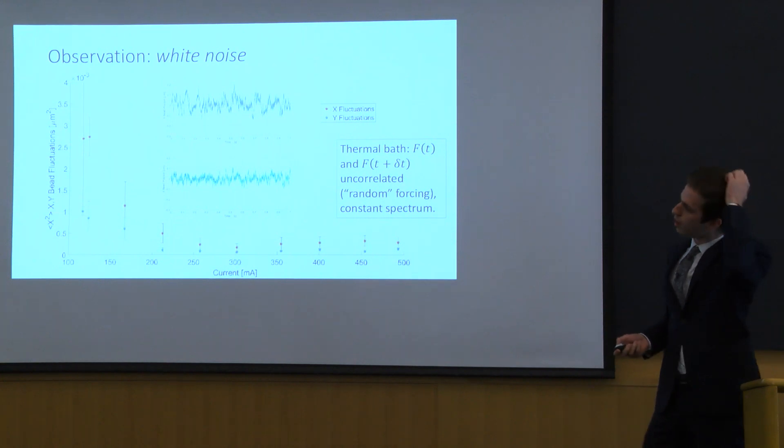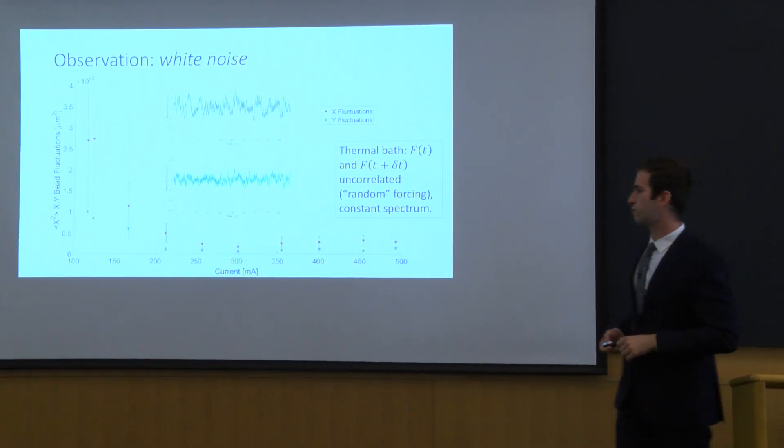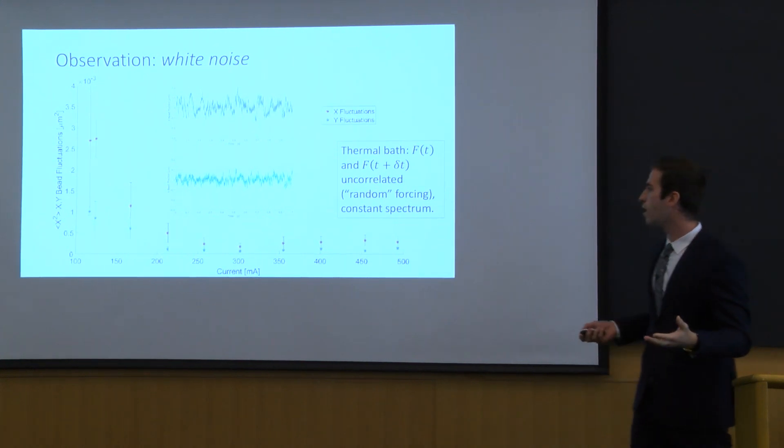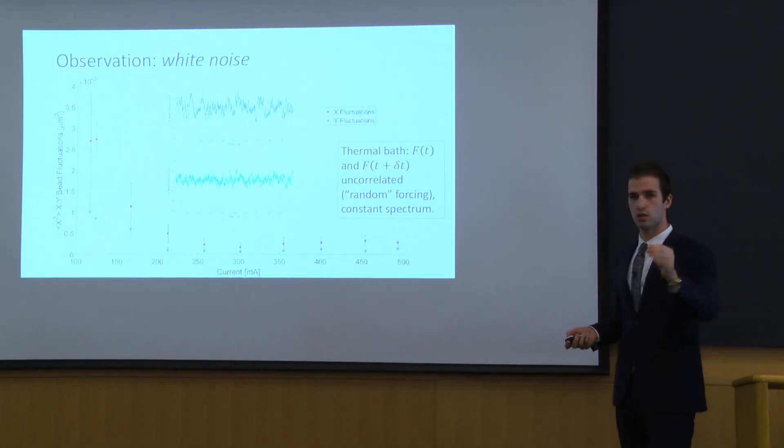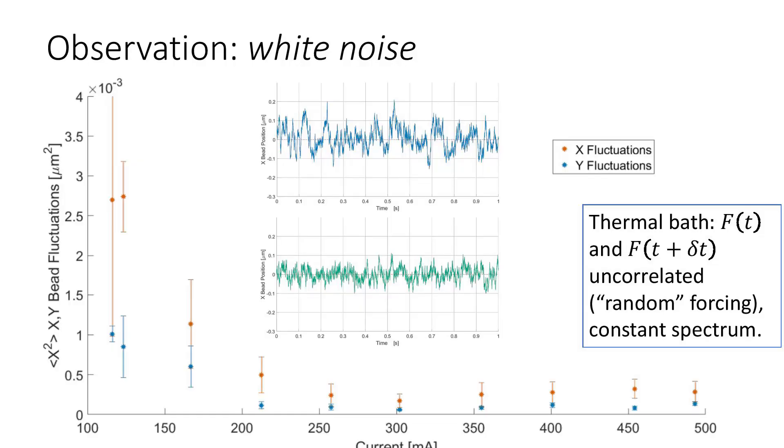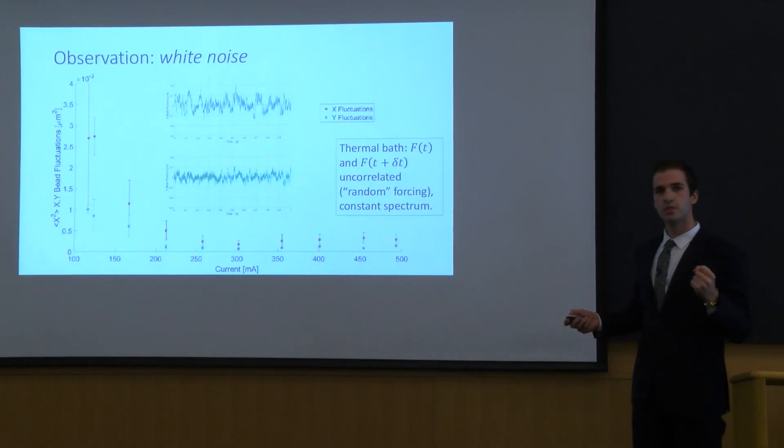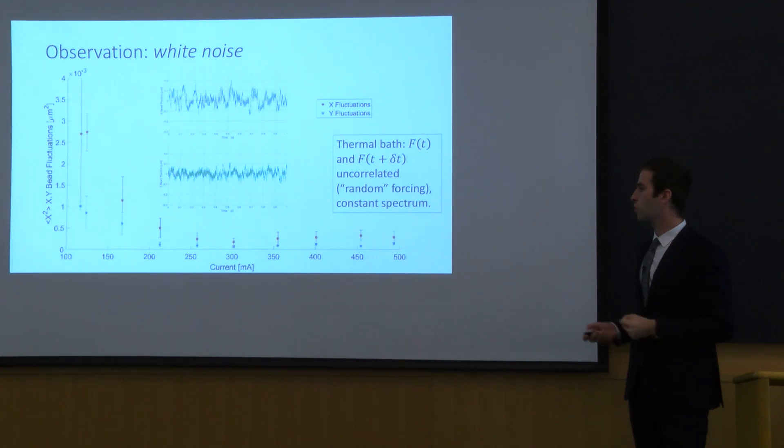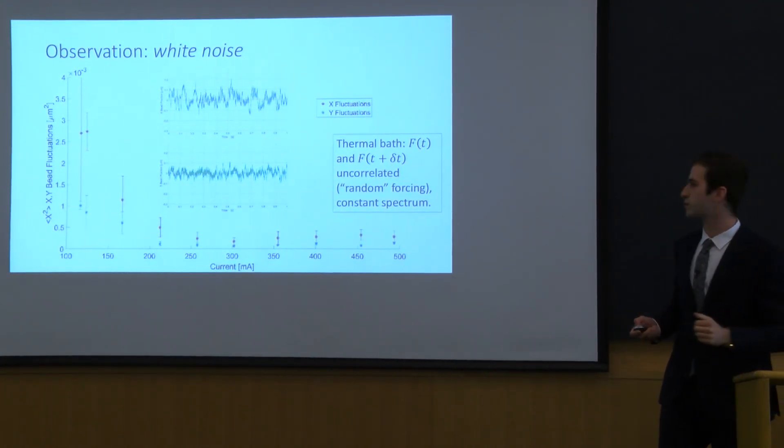Another thing that I would like to point out is to look at this plot of fluctuations in x and y and the power which is linear with the current of the lasers. As you can see as the power becomes big this means that we are trapping more so we have less fluctuations which is something as expected.